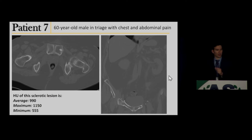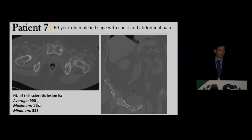Case 7: a patient who came to triage with overall chest and abdominal pain. We got CT of the chest, abdomen, and pelvis. I'm showing you this sclerotic lesion in the left pubis — we've measured the Hounsfield units of this lesion and need to figure out how we're going to handle that.